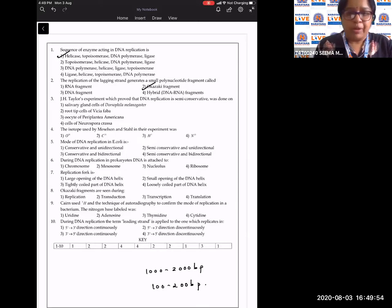J.H. Taylor's experiment which proved that DNA replication is semi-conservative was done on the root-tip cells of Vicia faba. So answer to this question is the second one.